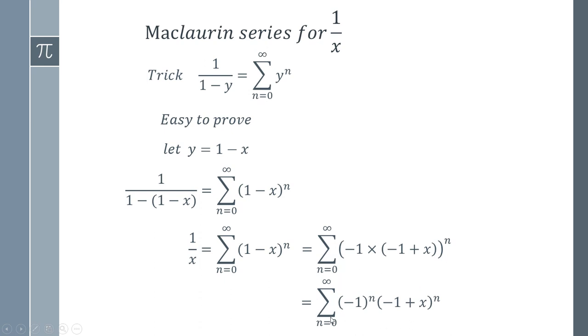And so 1 over x can actually be written as this Maclaurin series, which is very easy to obtain once you assume this series. And of course I have put a link in the description showing you how you get this, so you can have the full complete proof.